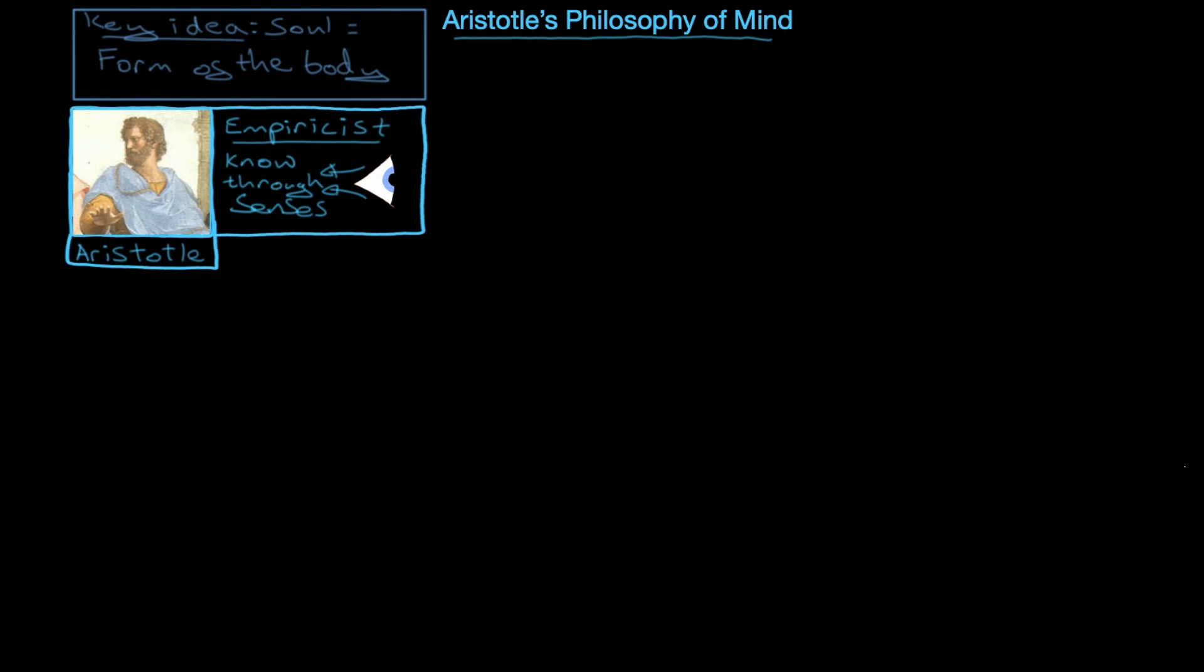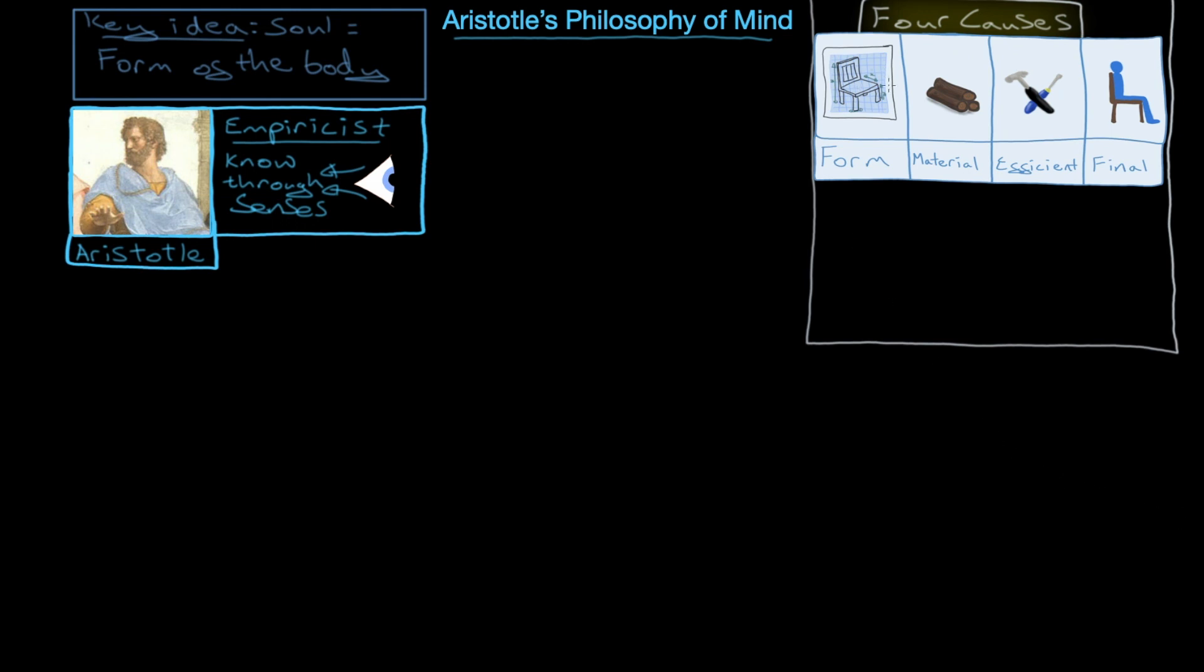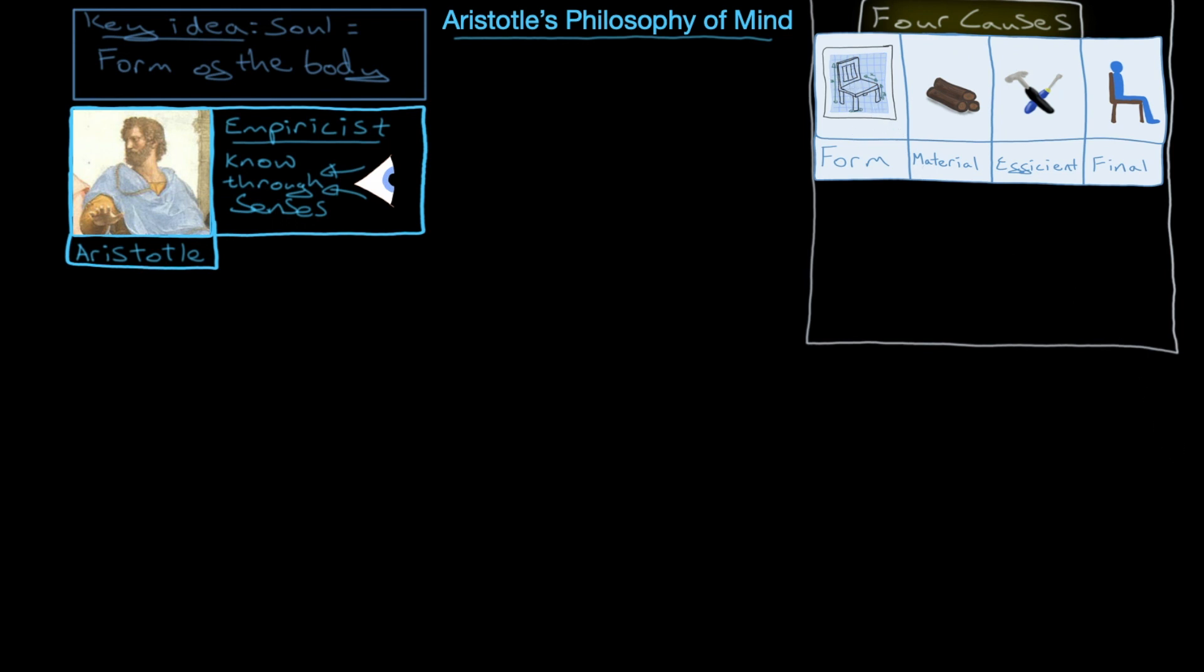The fundamental idea is that the soul is just the form or the performance of the body. Remember, the form is one of the four causes - it's essentially the shape and the unity of the thing. What separates the chair from other things in the room? Its form. The soul is the form of the body.